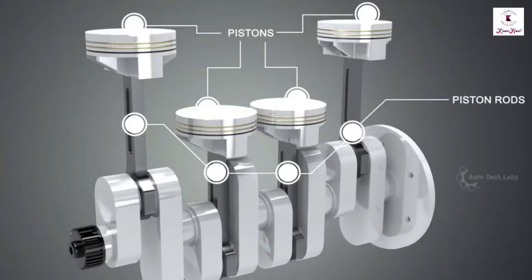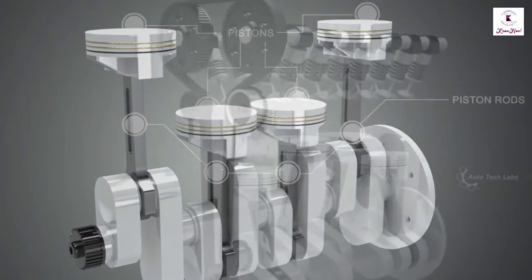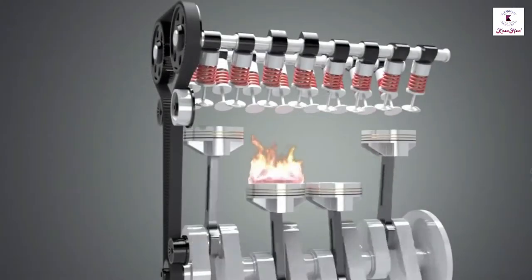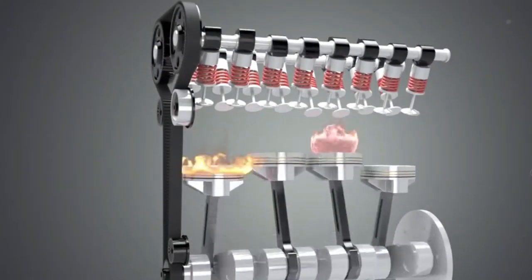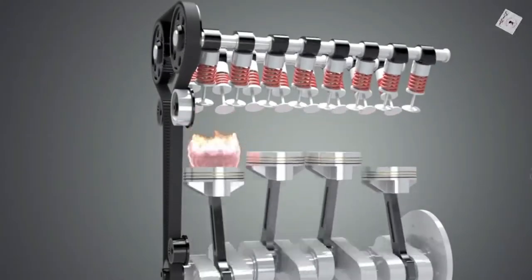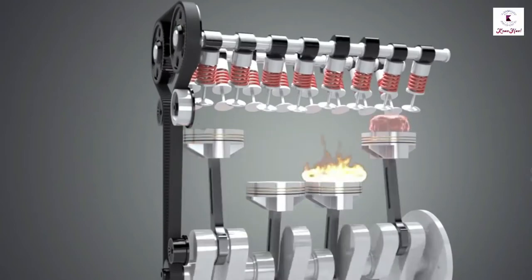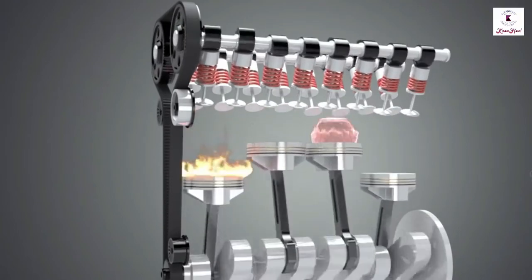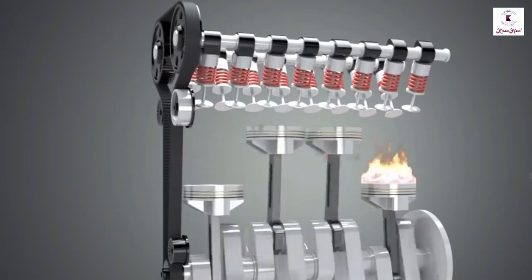The connecting rod is required to transmit the compressive and tensile forces from the piston. In its most common form, in an internal combustion engine, it allows pivoting on the piston end and rotation on the shaft end.